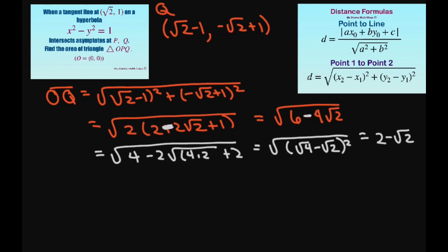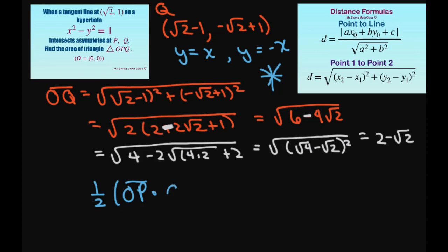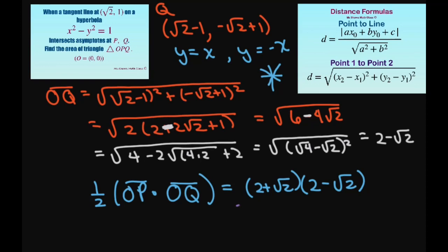Since the asymptotes y = x and y = -x are perpendicular, triangle OPQ is a right triangle with the right angle at O. The area equals ½ × OP × OQ = ½ × (2 + √2)(2 - √2) = ½ × (4 - 2) = ½ × 2 = 1. So the area of triangle OPQ is 1.